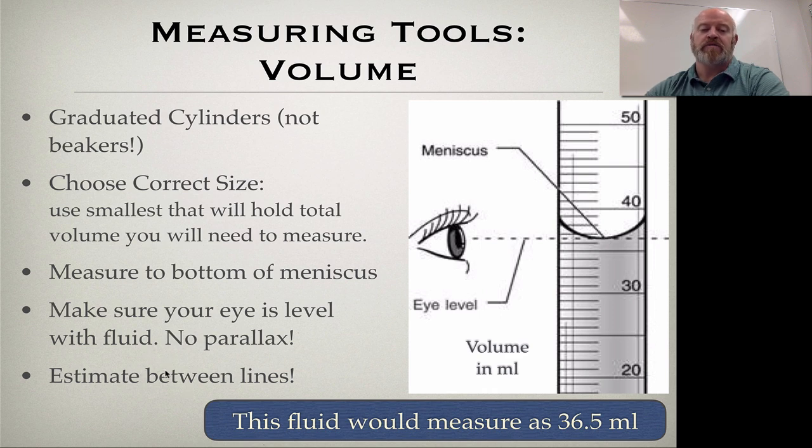Now as before, make sure you're estimating between those lines. So if we take a look, here's 30, here's 35, this is 36, this is 37, so our meniscus falls someplace between 36 and 37. The tool gives me that. So my measurement here would be 36.5. I think that hits exactly halfway between those two things. If you think it's a little bit lower than that, maybe you call it 36.4 and that's okay also, because that last digit is always an estimate.